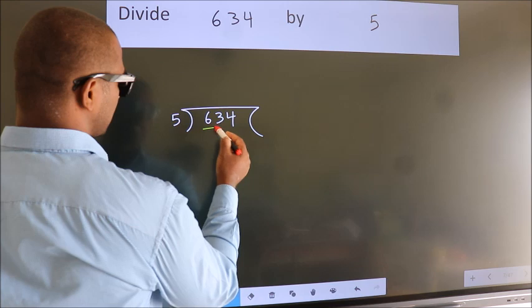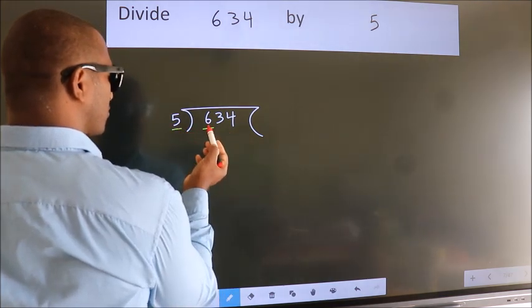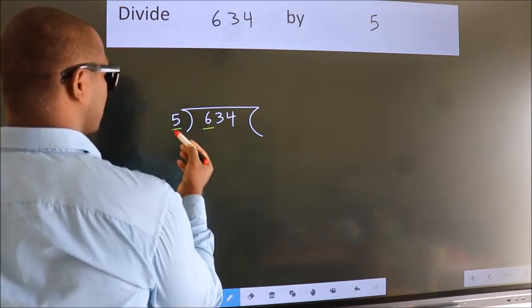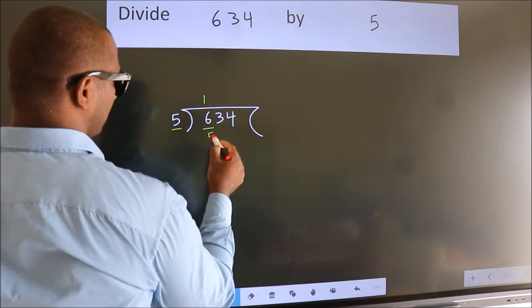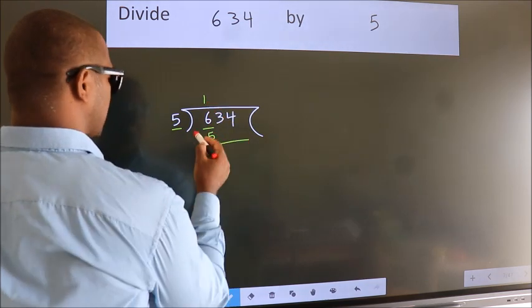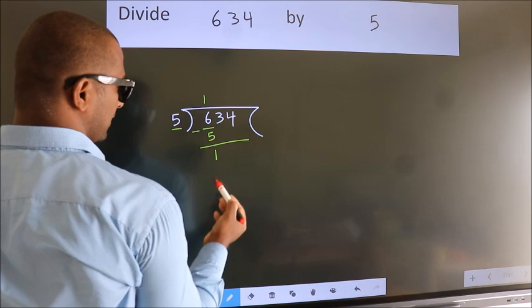Here we have 6, here 5. A number close to 6 in the 5 table is 5 once, 5. Now we should subtract. We get 1.